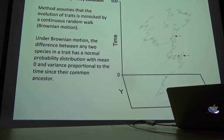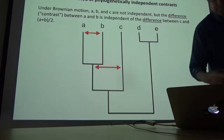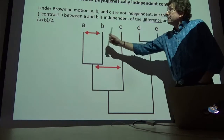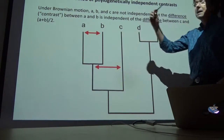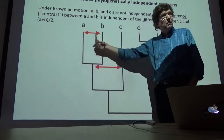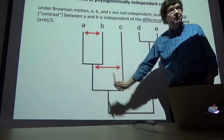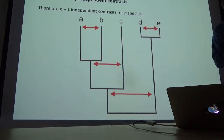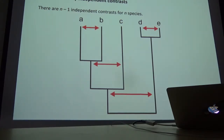Under the Brownian motion assumption, the three species A, B, and C are not independent, because A and B share a more recent common ancestor. However, the difference between A and B is independent of the difference between C and the average of A and B. Those he called contrasts. For N species there are N minus one independent contrasts. Under the assumption of Brownian motion, you can extract observational data from a phylogenetic tree by using the contrasts instead of the species measurements themselves.